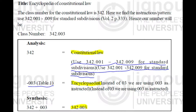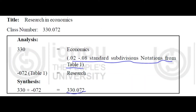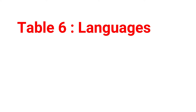The final number will be 342.003. Now let's take one more example: a book on research in economics. From the schedules, 330 is economics. Instructions indicate 0.02 up to 0.08 for standard subdivisions notations from Table 1. From Table 1, hyphen 072 is research, so add this number to 330. The final number will be 330.072.